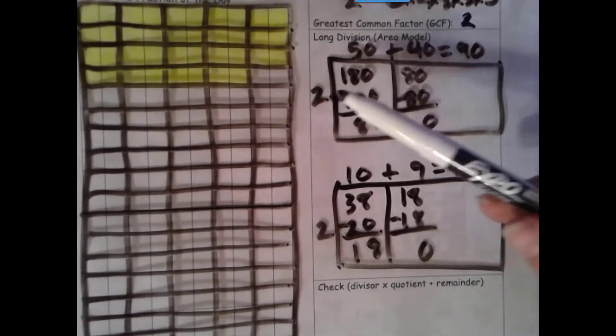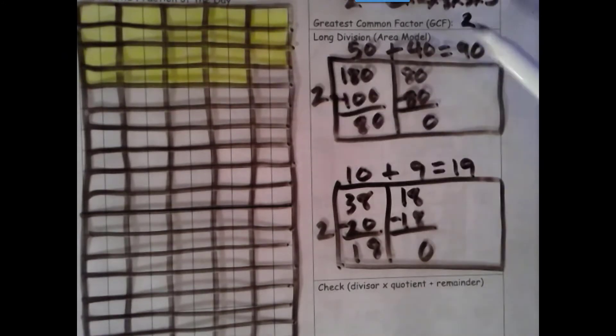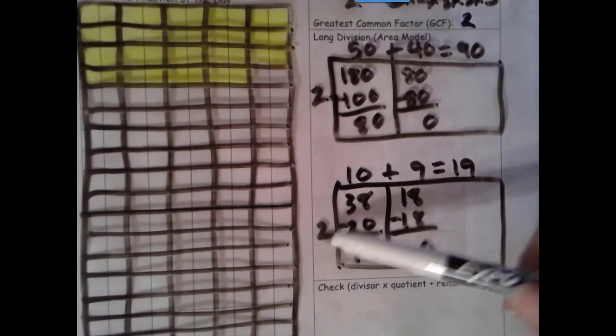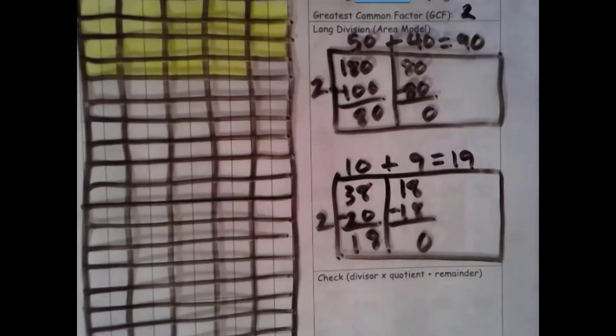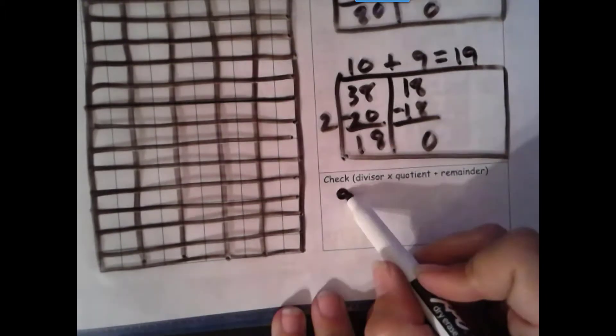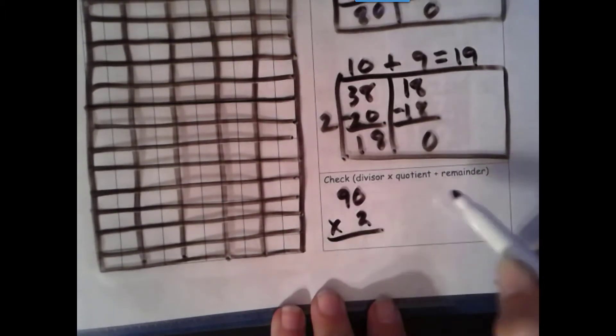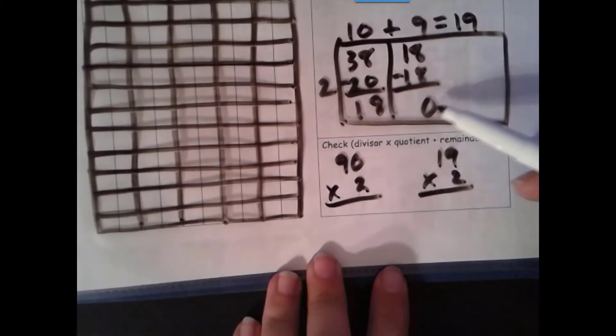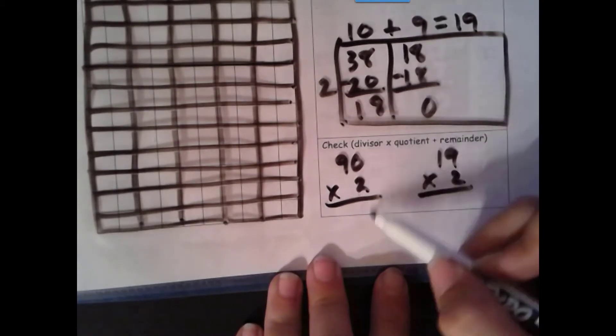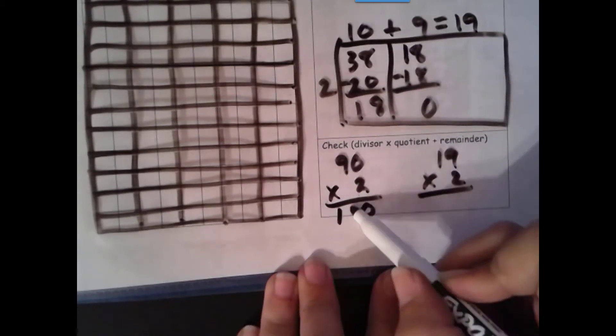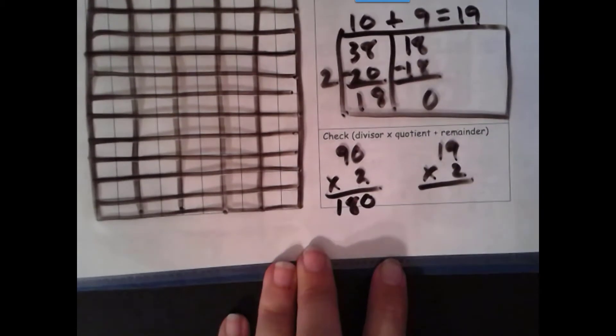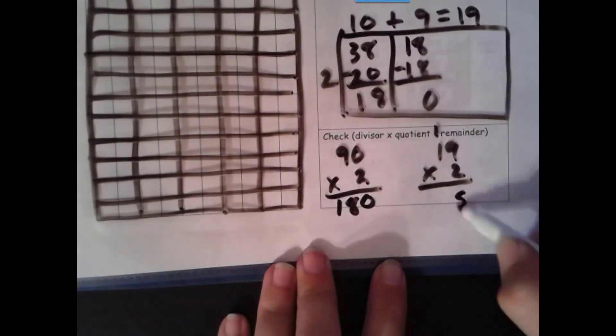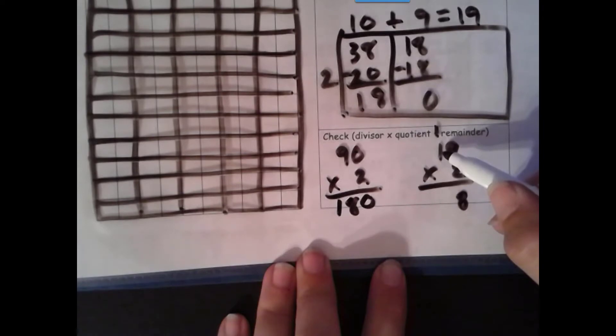All right, so now let's check using our inverse operation. Divisor times quotient plus remainder. Since our remainder for both is zero, and the identity property of addition says when you add zero, it stays the same, we don't need to actually add it. Only when it's a non-zero number do we need to add the remainder. 2 times 0 is 0. 2 times 9 tens is 18 tens.